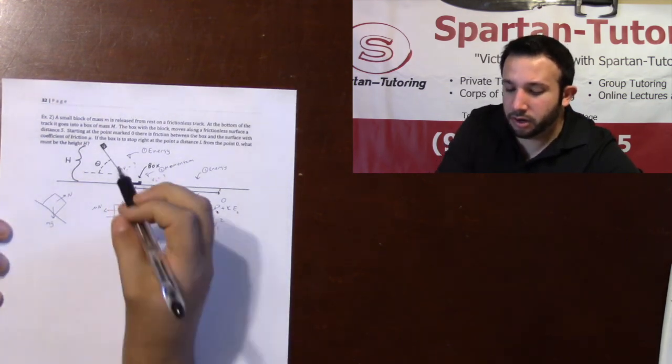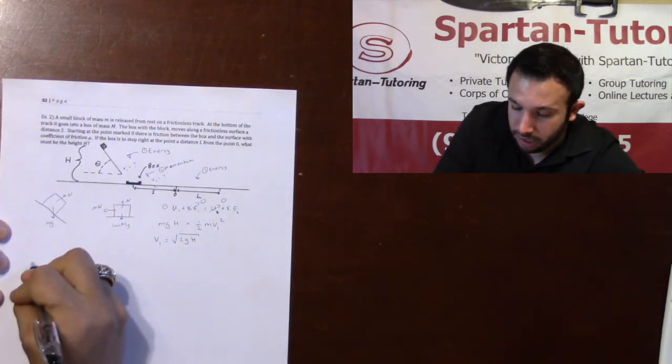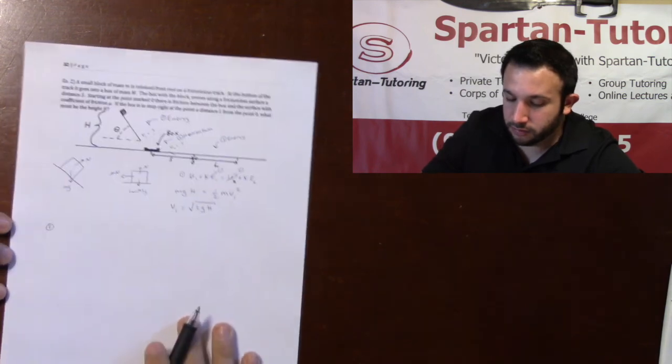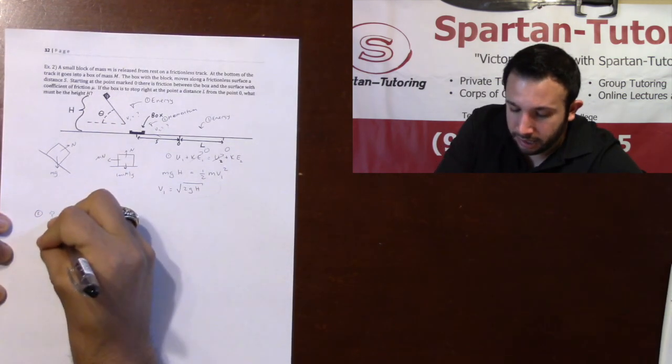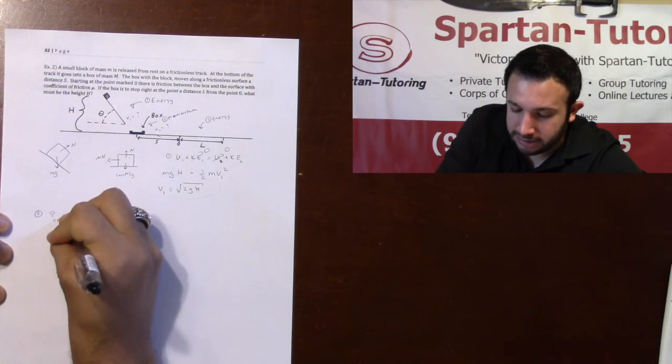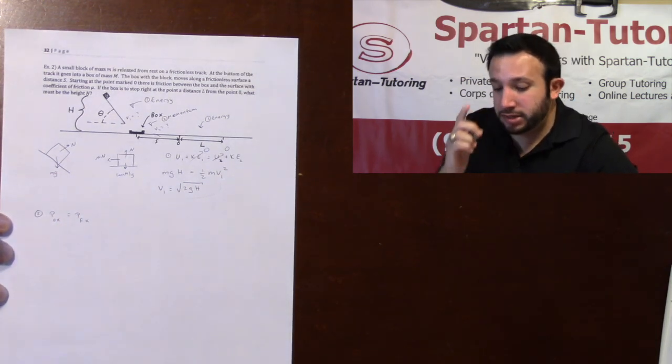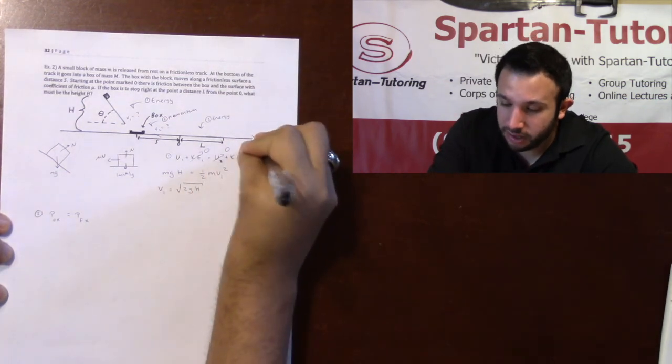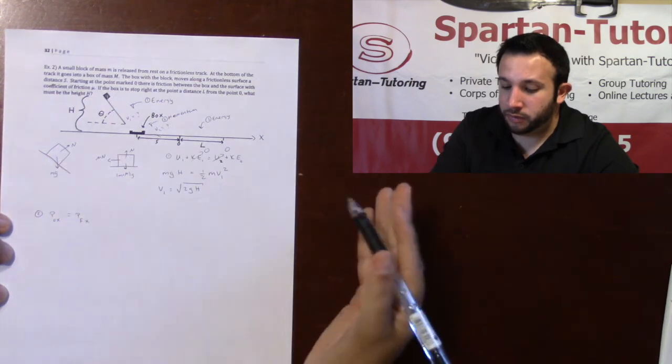Okay. Now that I know the velocity right before it strikes the block, now we need to use conservation of momentum. Using conservation of momentum, I need the P0 in the X direction to equal PF in the X direction. And the reason I really care about the X direction is because that's the direction that the box is going to move at the end.